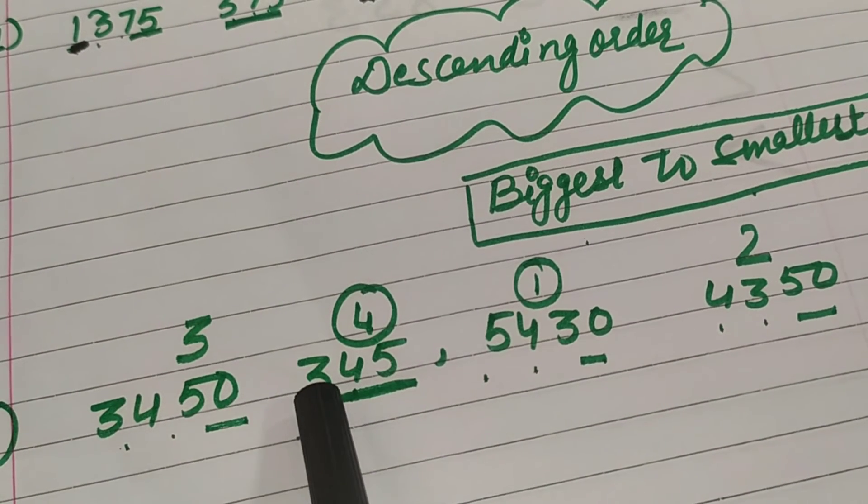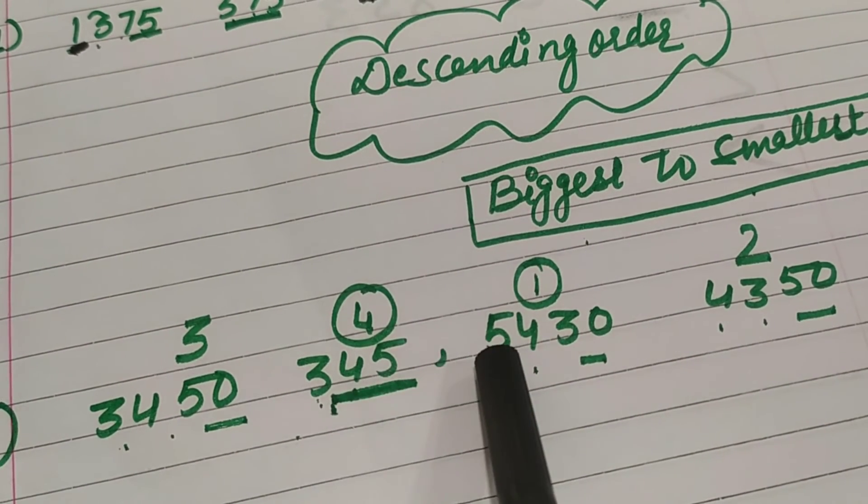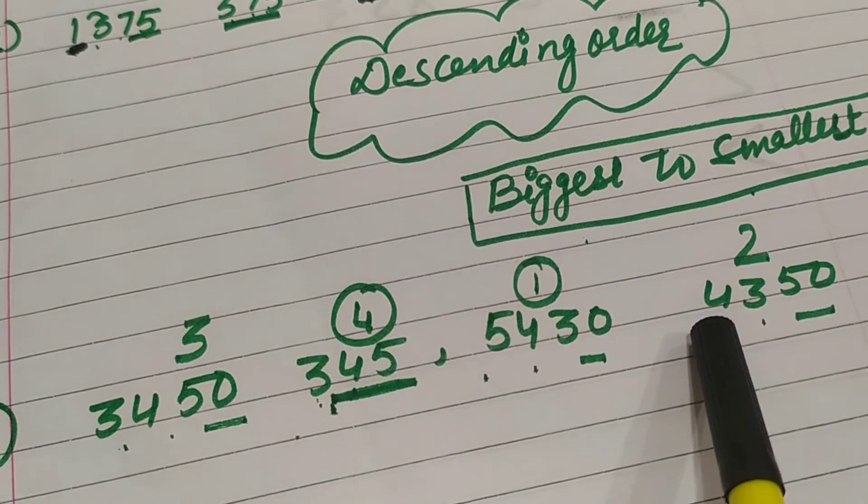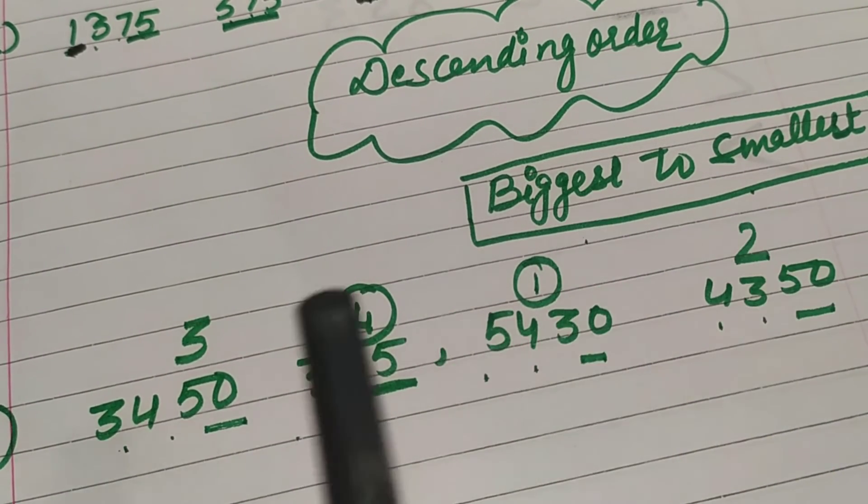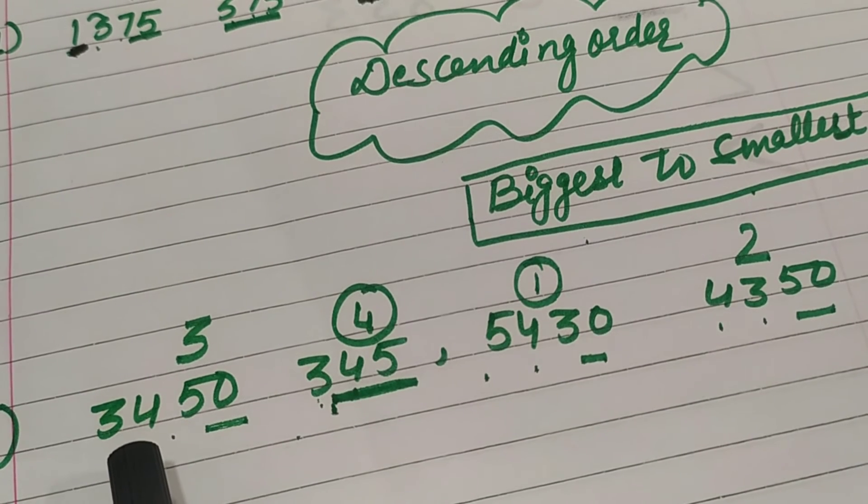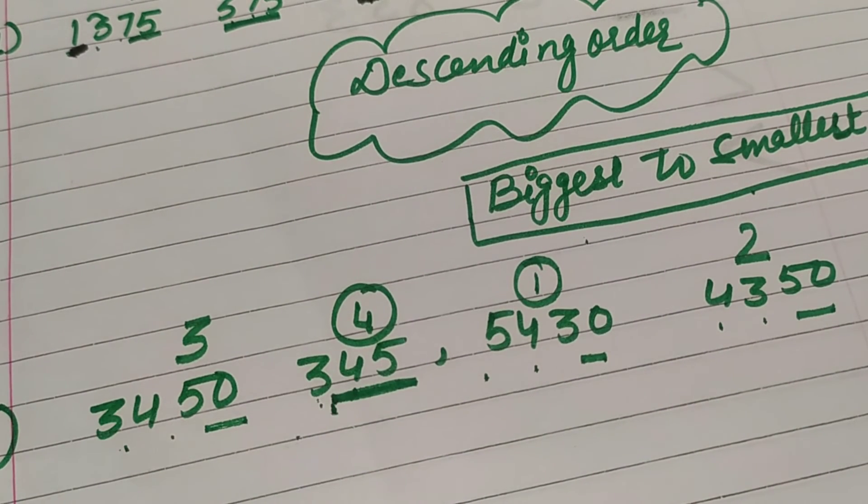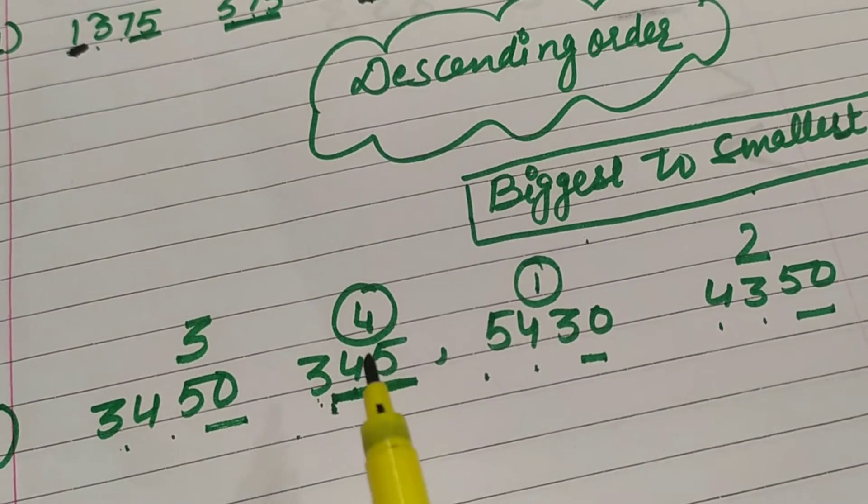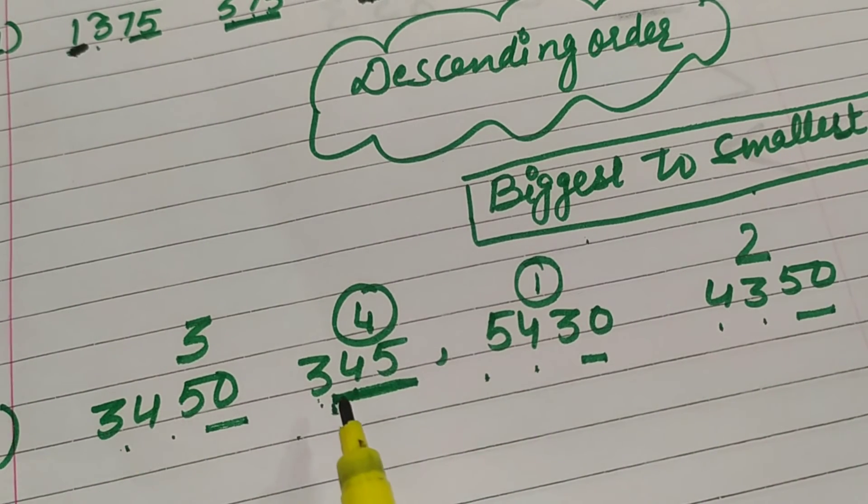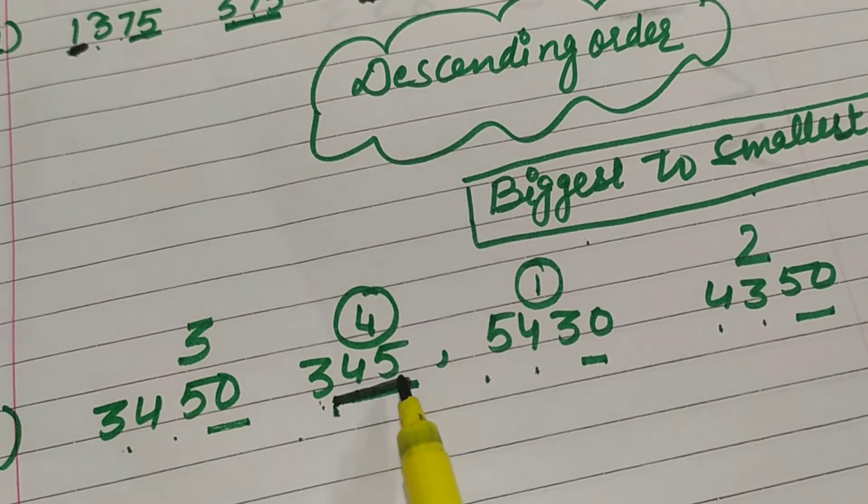3450, 345, 5430 and 4350. Then the biggest number is... This is the 3 digit number. This number is now and this will come in fourth position.